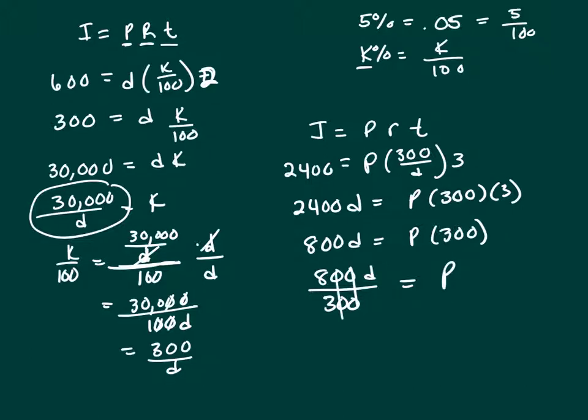Cross out, cross out. 8 thirds D is how much I need to invest, and that's answer E.